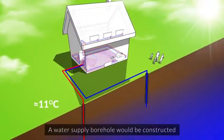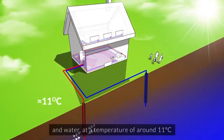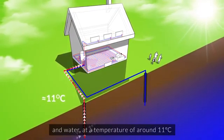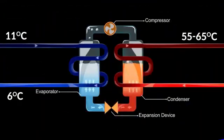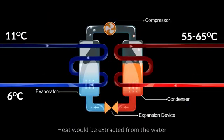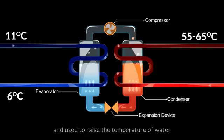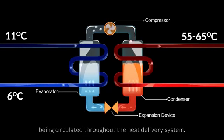A water supply borehole would be constructed, and water at a temperature of around 11 degrees Celsius is pumped into the building to feed the heat pump. Heat would be extracted from the water and used to raise the temperature of water being circulated throughout the heat delivery system.